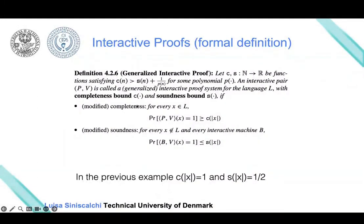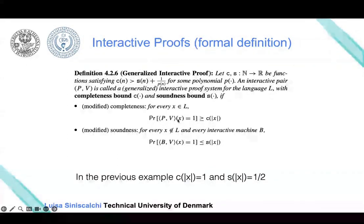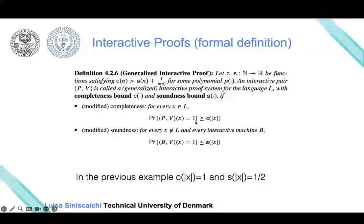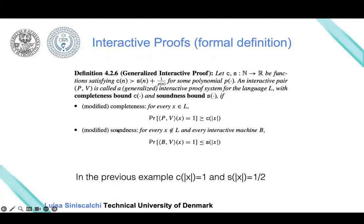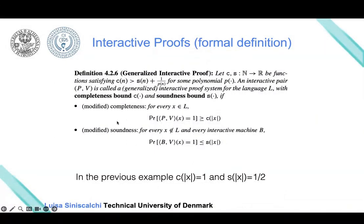The completeness property says that if the prover and the verifier interact on common input X—where the parentheses indicate interaction between prover and verifier—then at the end of this interaction, the verifier will output 1, meaning the verifier accepts, conditional on the theorem being true.